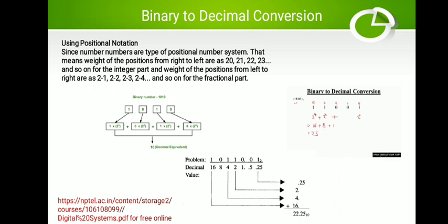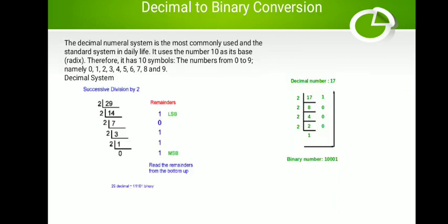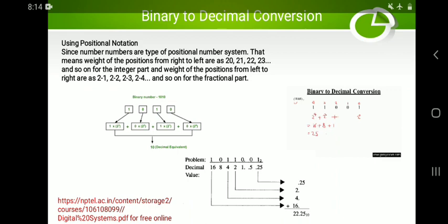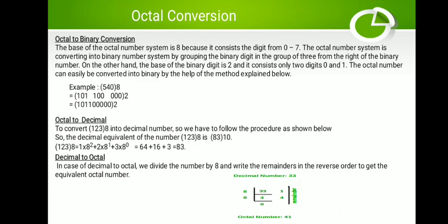For the fractional part, after the decimal point the given digits are 0 and 1. We multiply each symbol by negative powers of 2: 0 × 2⁻¹ = 0, plus 1 × 2⁻² = 1/4 = 0.25. So the final decimal equivalent is 22.25.